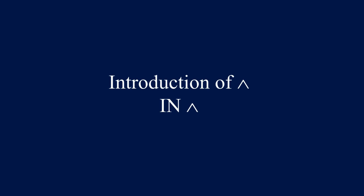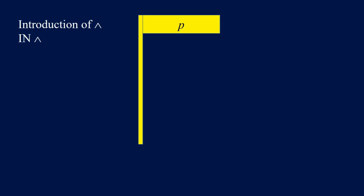Introduction of AND — we're going to use IN AND for reasoning. If we have P in the flag or under the flag, and we have Q under the flag, then we can conclude P and Q. Similarly, if we have Q in the flag or under the flag, and we have also P under the flag, then we can conclude P and Q.